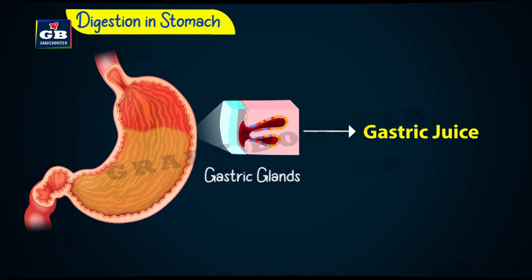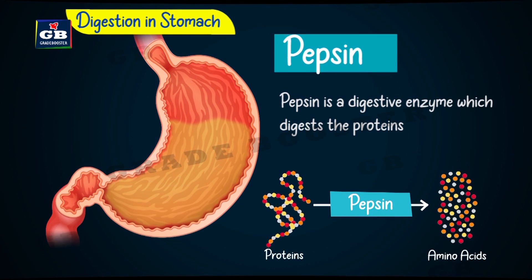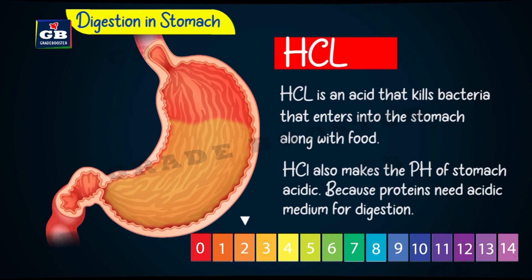Let us see the different components of gastric juice. Gastric juice has pepsin, hydrochloric acid, and mucus in it. Pepsin is a protein-digesting enzyme. The medium of the stomach must be acidic for the proper action of pepsin, so the stomach medium is made acidic by hydrochloric acid.